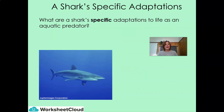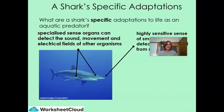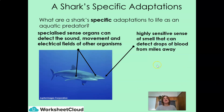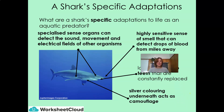Now let's take a look at specific adaptations to life as an aquatic predator. The shark has specialized sense organs that can detect the sound, movement and electrical fields of other organisms. They have a highly sensitive sense of smell that can detect drops of blood from miles away, as well as lots of very sharp teeth that are constantly replaced. They also have a silver colouring underneath, which acts as camouflage.